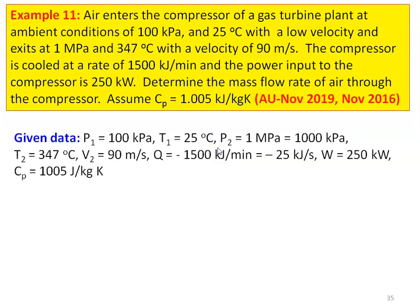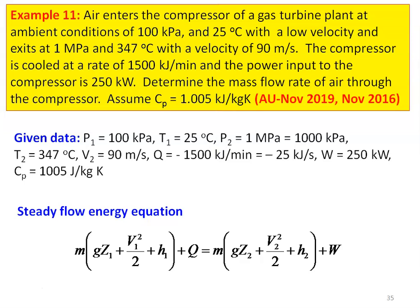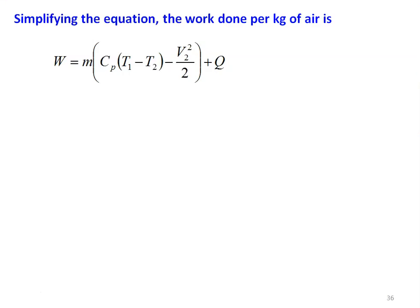After reading the problem, write down the given data. Pressure P1 is 100 kilo Pascal, temperature T1 is 25 degrees Celsius, pressure P2 is 1 mega Pascal which is 1000 kilo Pascal, T2 is 347 degrees Celsius, velocity V2 equal to 90 meters per second. Heat transfer Q equals minus 1500 kilojoules per minute — negative because the heat is leaving, as the compressor is cooled — which is 25 kilojoules per second. Power input to the compressor is 250 kilowatts, and Cp equals 1005 joules per kilogram Kelvin.